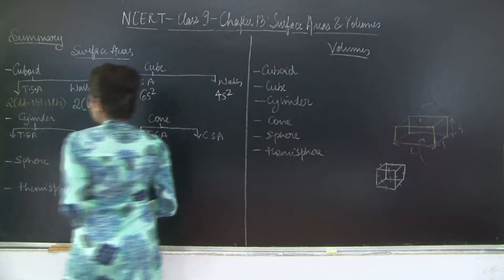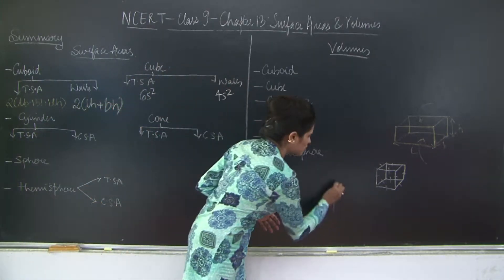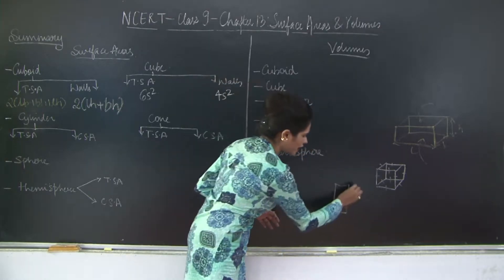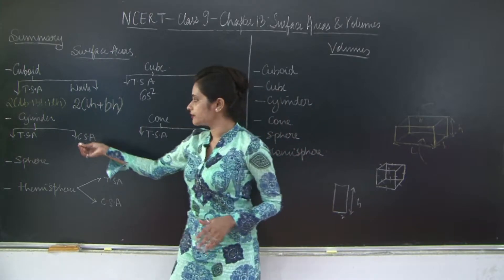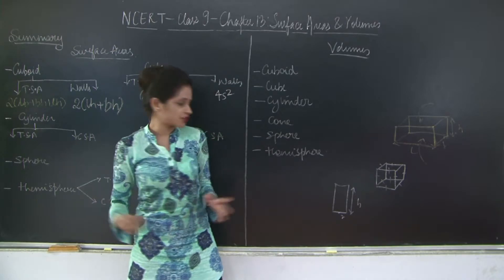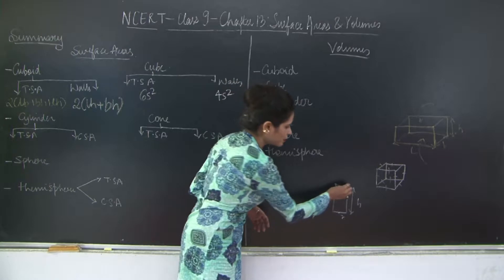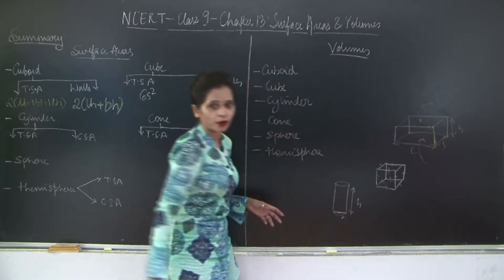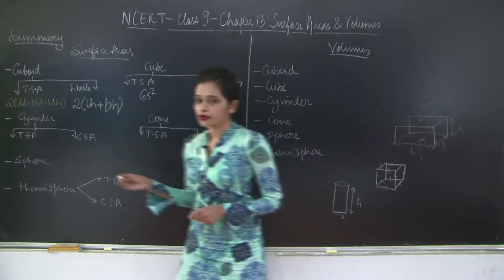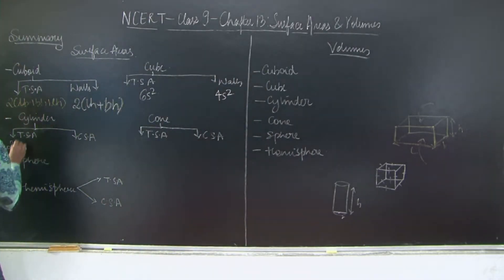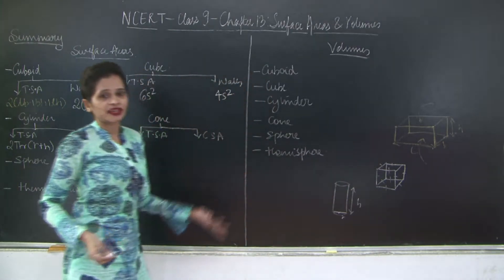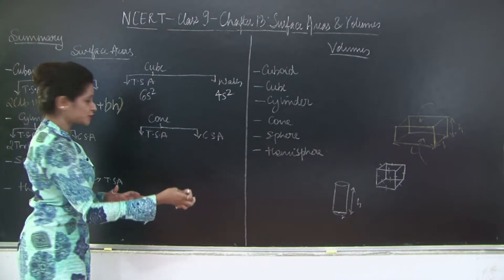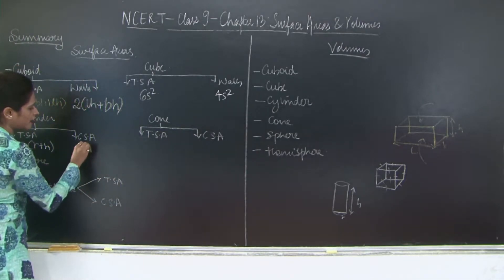Moving on to cylinder. For a right circular cylinder, the dimensions are height and base radius. The total surface area includes the entire curved region plus the area of the base and top, and is given by 2πR(R + H). The curved surface area considers only the curved portion — like a hollow pipe where the top and bottom are not included — and is given by 2πRH.